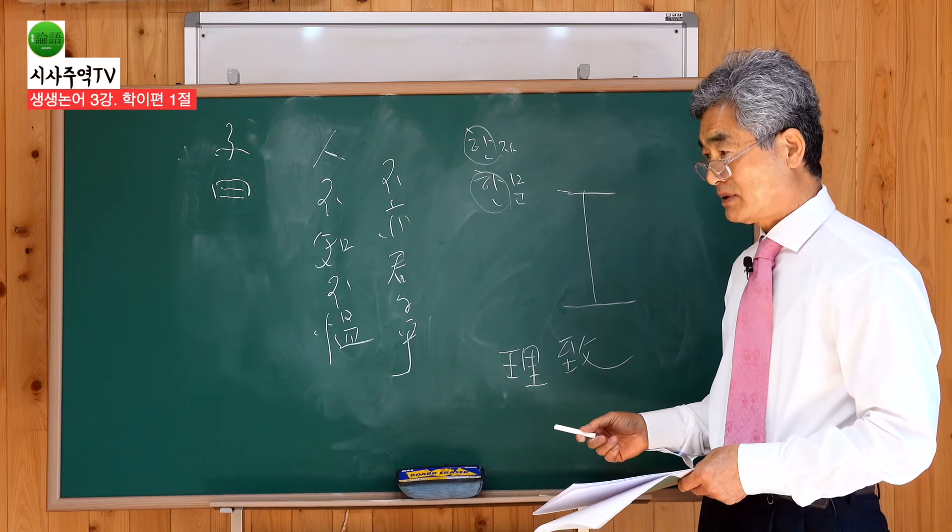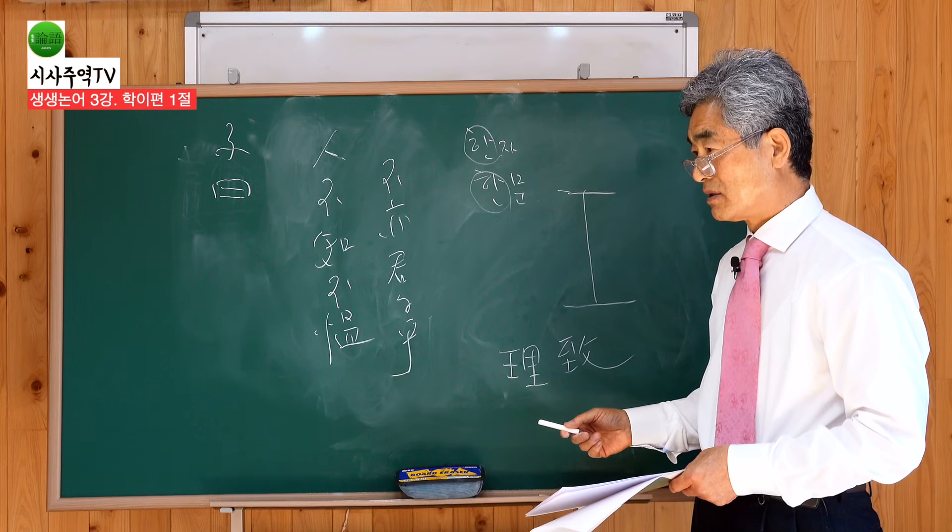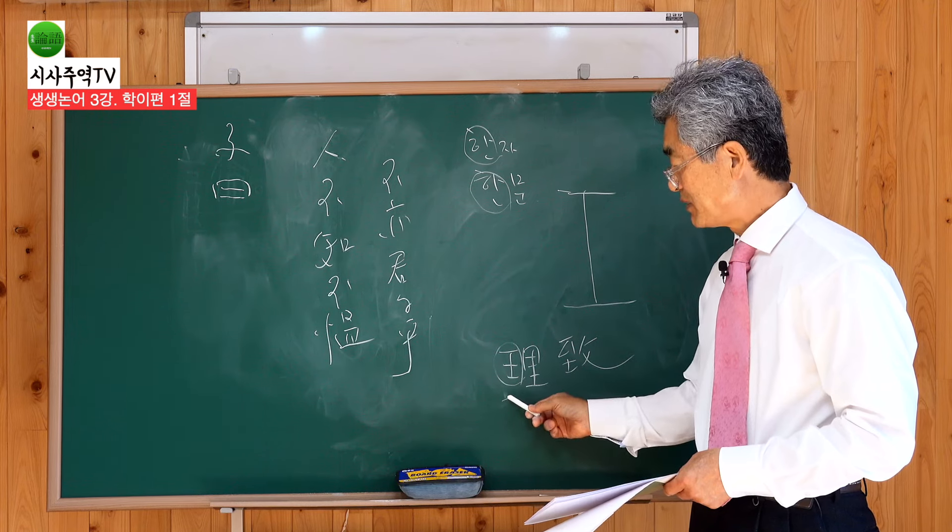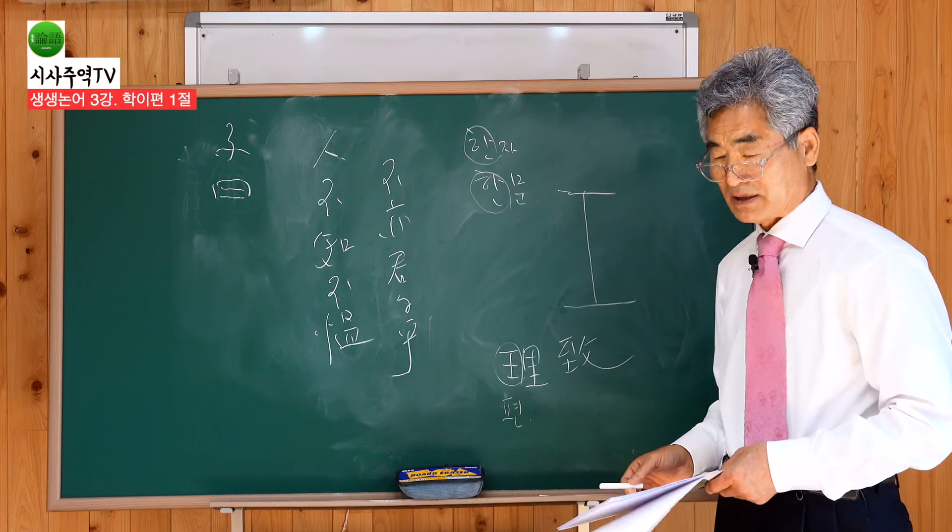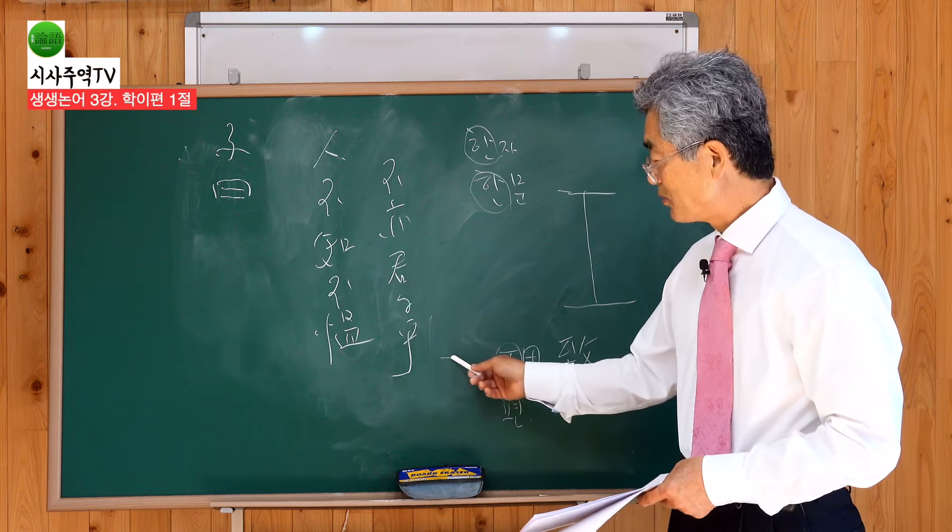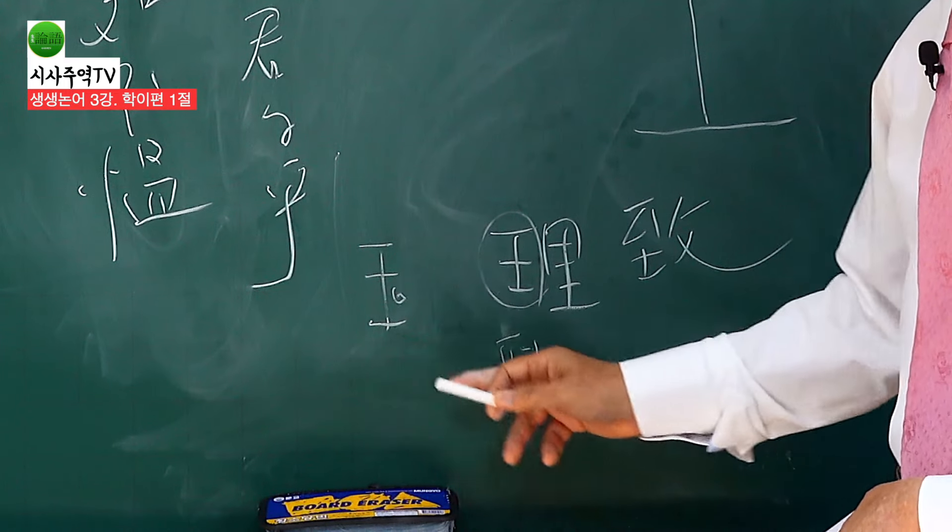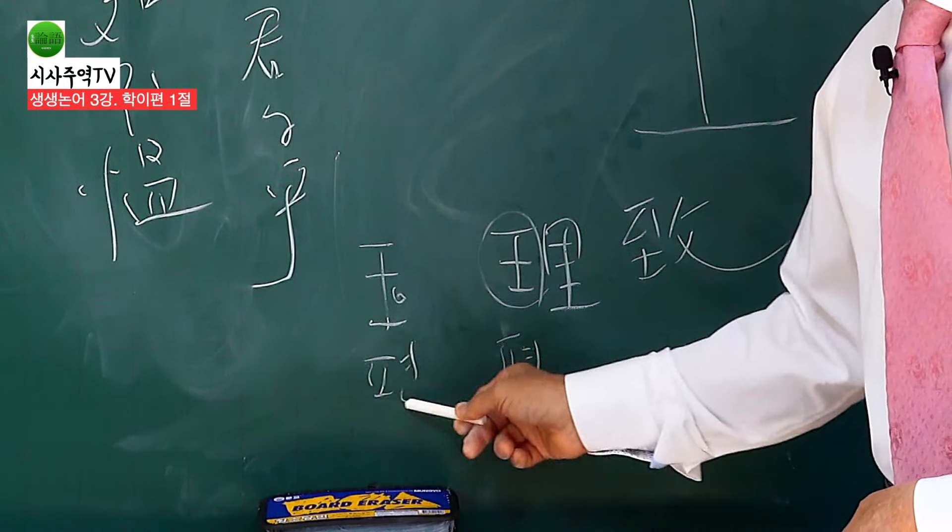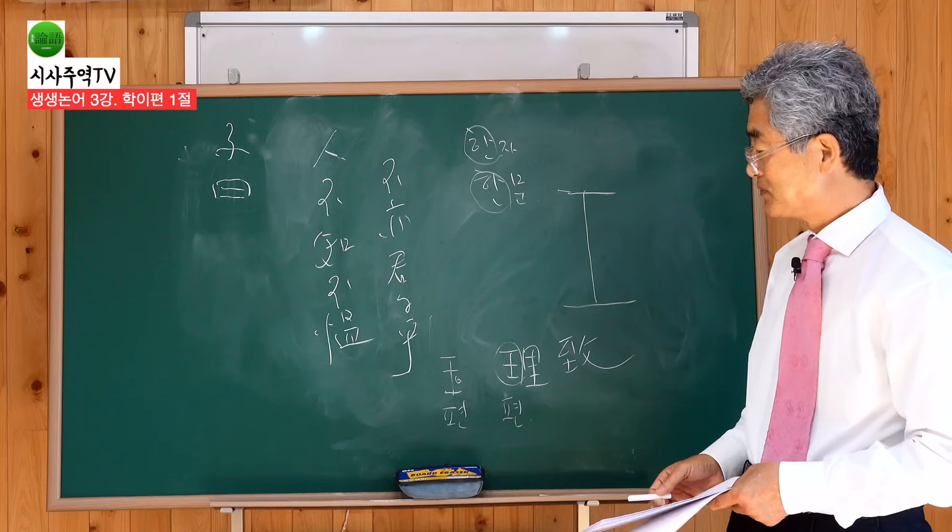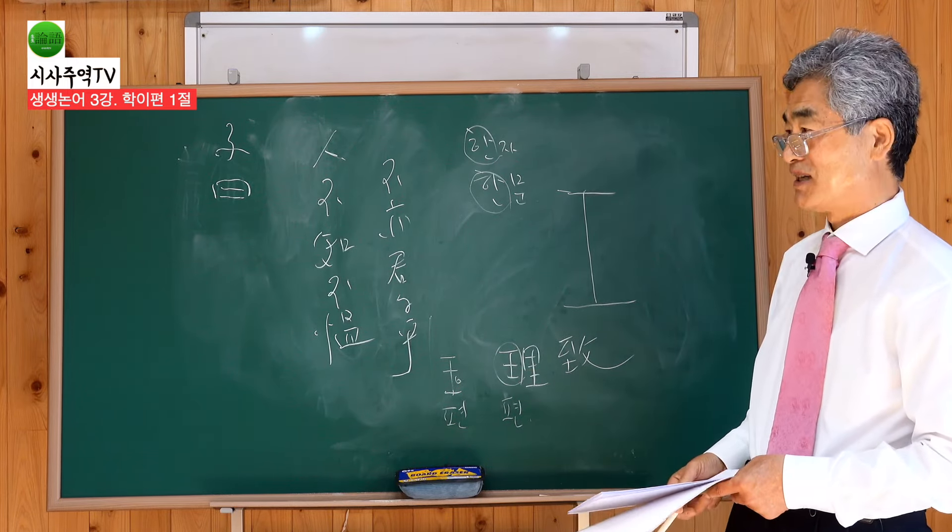옛날에 할아버지 얘기가 하나 있죠. 할아버지가 손지 보고 이놈아 거기 할비방에 가서 왕편 가오느라 이랍니다. 왕편. 이 할아버지가 공부를 많이 모였어. 그런데 손지를 가리켜. 그런데 옥자의 옥편이 이게 옥자인데 옥편이 이래 되어있거든요. 옥편 가는 게.